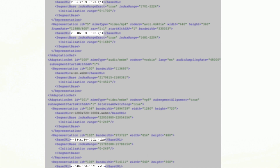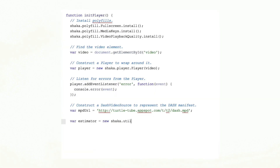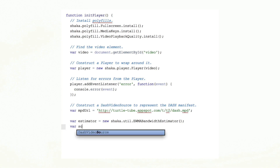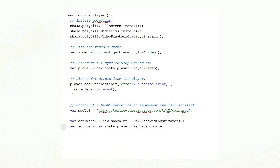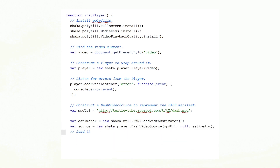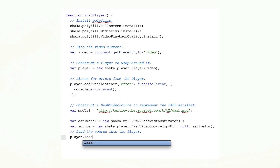That's great for media delivery to a range of devices. Next, we create a bandwidth estimator using the Shaka utilities, and this is crucial for dynamically adapting to network conditions. And finally, load all that in the Shaka player. And that's it — adaptive streaming in just a few lines of code.